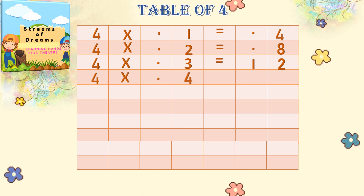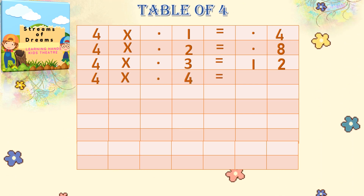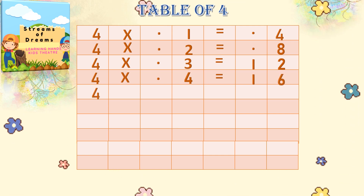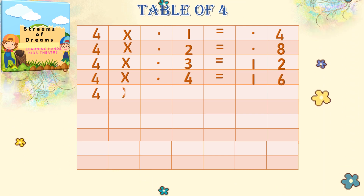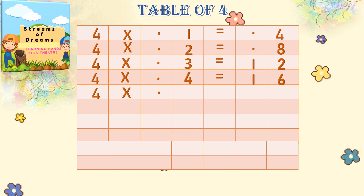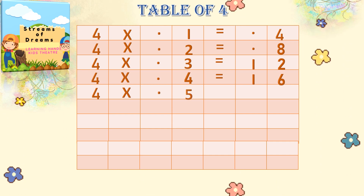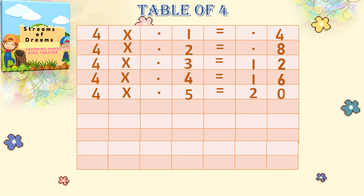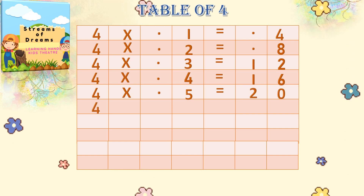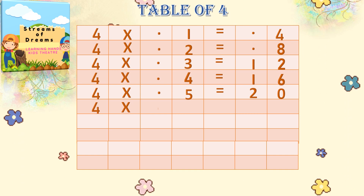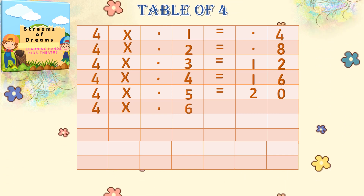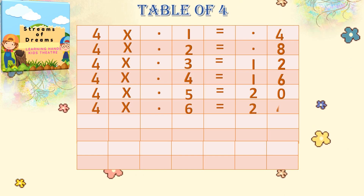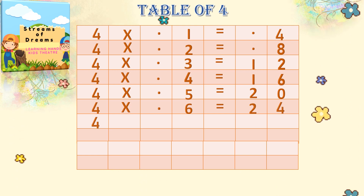4 into 4 equals — 12 plus 4 is 16. 4 into 5 equals — 16 plus 4 is 20. 4 into 6 equals — 20 plus 4 is 24.